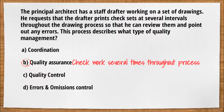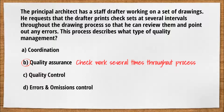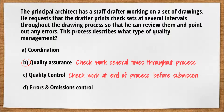Quality assurance is when the work is being reviewed several times throughout the process in order to pick up and correct errors early on and make sure everything is well coordinated. Quality control involves checking the work right before it's submitted to the owner, client, or contractor at the end of the process.